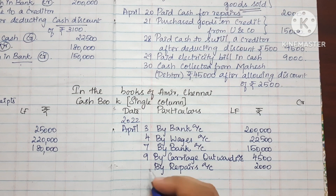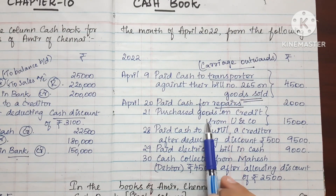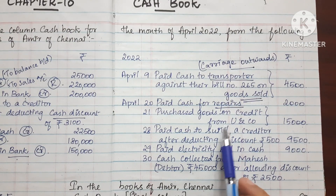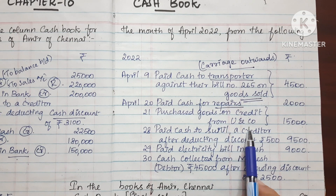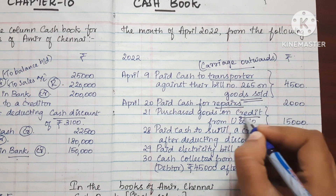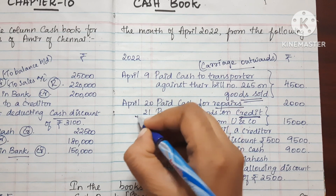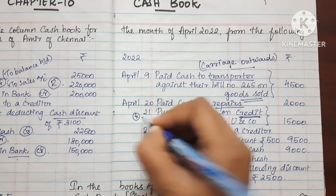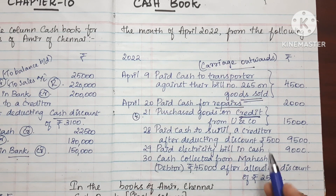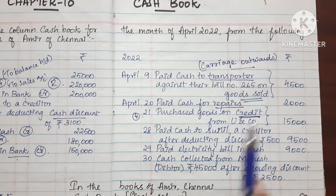The next transaction is: purchased goods on credit from Unco. Since this is a credit transaction, it does not involve cash and will not be recorded in the cash book. We can include only cash transactions in the cash book, not credit transactions.